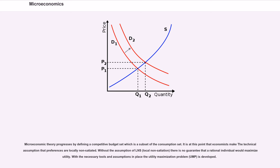Microeconomic theory progresses by defining a competitive budget set which is a subset of the consumption set. It is at this point that economists make the technical assumption that preferences are locally non-satiated. Without the assumption of LNS, there is no guarantee that a rational individual would maximize utility. With the necessary tools and assumptions in place, the utility maximization problem, UMP, is developed.